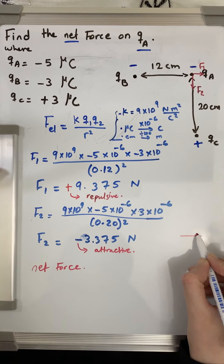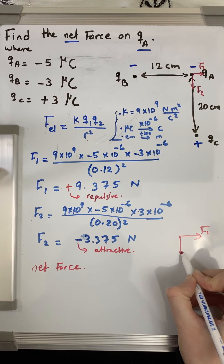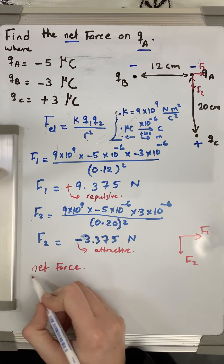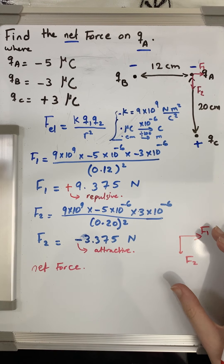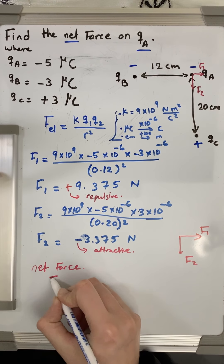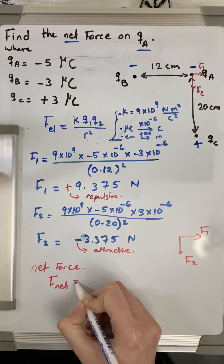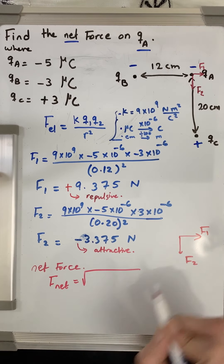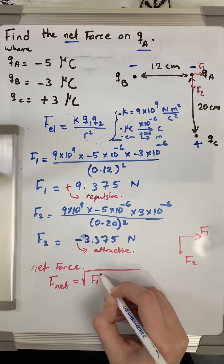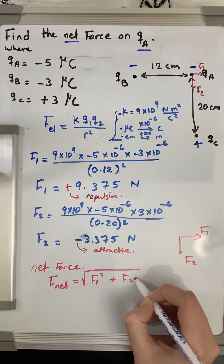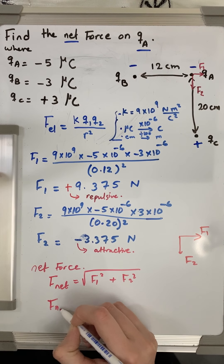are perpendicular. So to add them to find the net force, to add F1 and F2, I need to apply the Pythagorean theorem since they are perpendicular. So F net will be the square root of F1 squared plus F2 squared.